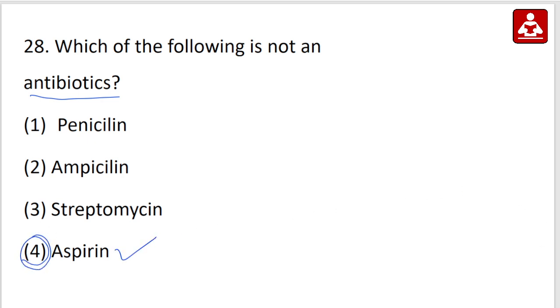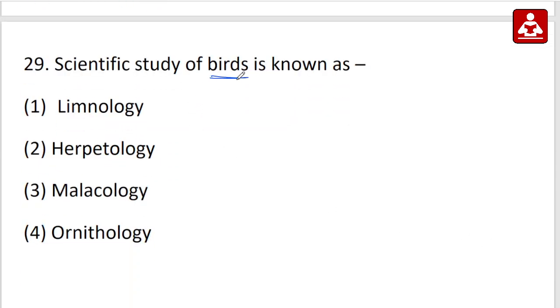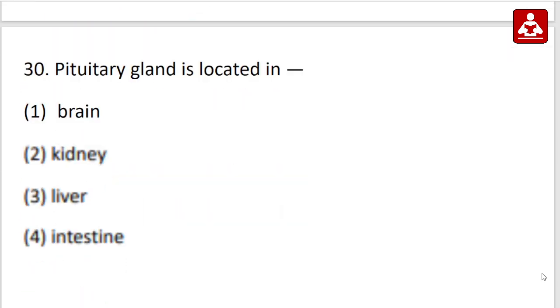Scientific study of birds is Ornithology. Option 4 is your right answer. Ornithology is the study of birds. Pituitary gland is located in brain, is your right answer. Option 1, brain is your right answer. So these are important science questions related to biology. I hope you will find this useful. Thanks for watching this video.